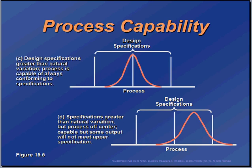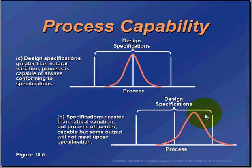Let's take a look at how a process that is in specification — that meets it very well and has plenty of room — can still be off-center. It may fit within the boundaries, but the average is too high. In this case, we're going to get some values out here beyond the upper control limit that are going to be defects.